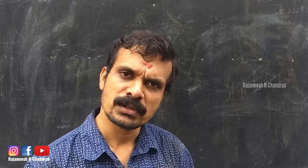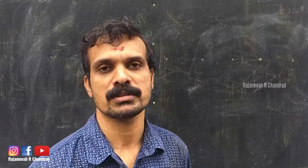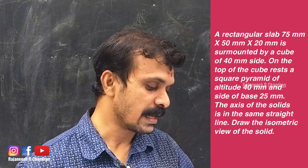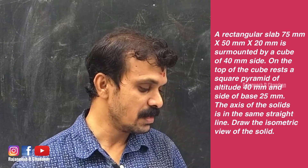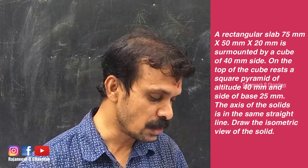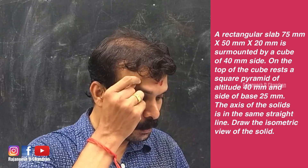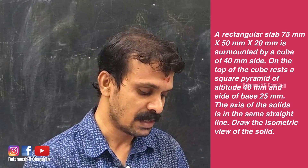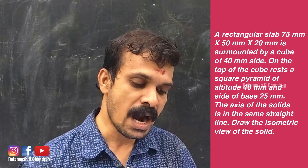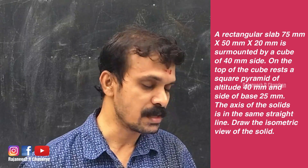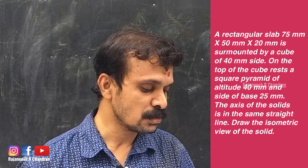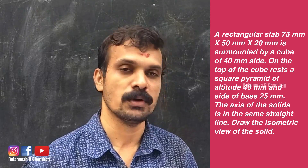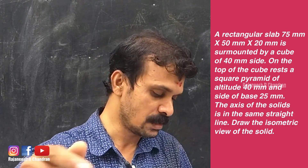In the university exam point of view, this combination of solids is important. The problem is: a rectangular slab 75 mm x 50 mm x 20 mm is surmounted by a cube of 40 mm side. On the top of the cube rests a square pyramid of altitude 40 mm and a side of base 25 mm. The axis of the solids are lying in the same straight line. Draw the isometric view of the solid.